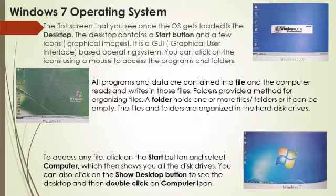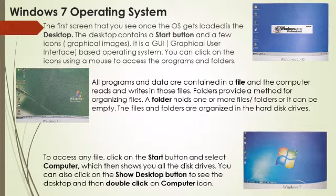So therefore, students, we save our data like presentations, songs, movies and many other things in files. And these files are organized in folders which are saved on hard disk drives. To access any file, click on the start button and select Computer, which then shows you all the disk drives. You can also click on the Show Desktop button to see the desktop and then double click on the Computer icon.